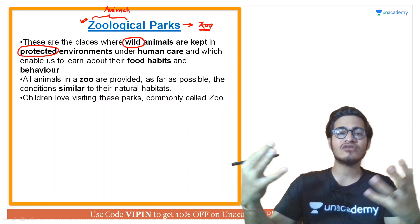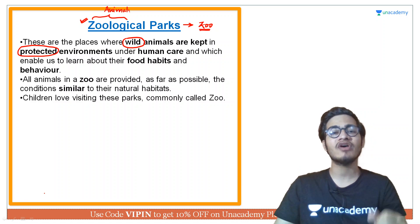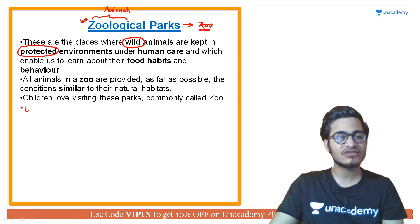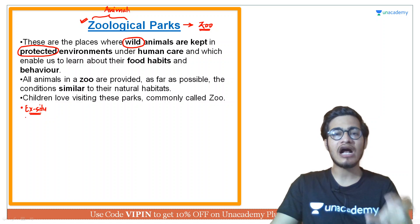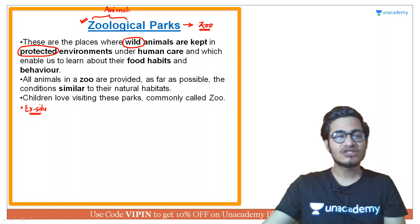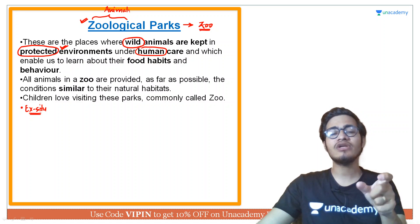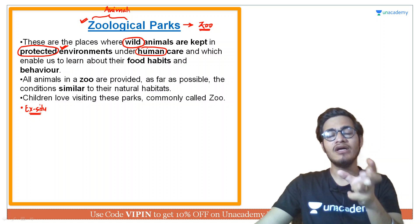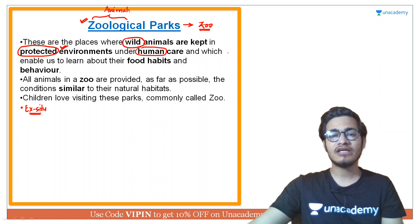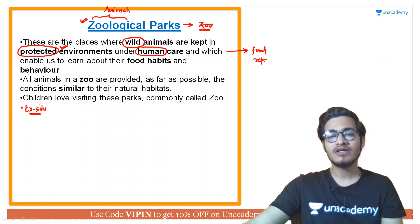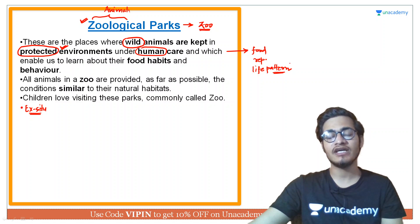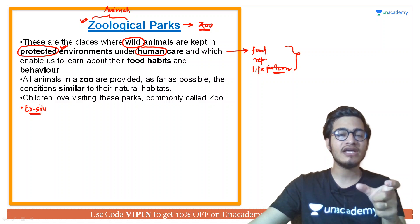Animals are brought from the wild and kept in these environments so that their behavior can be noticed. This is ex-situ conservation — animals are brought from outside and placed in a protected environment under human care. Humans observe their daily activities, since the area is small and supervision is possible. Observers take note of what food a particular animal prefers, what its reproductive habits are, what its life cycle and life pattern look like — all of these things can be noticed about the animal.